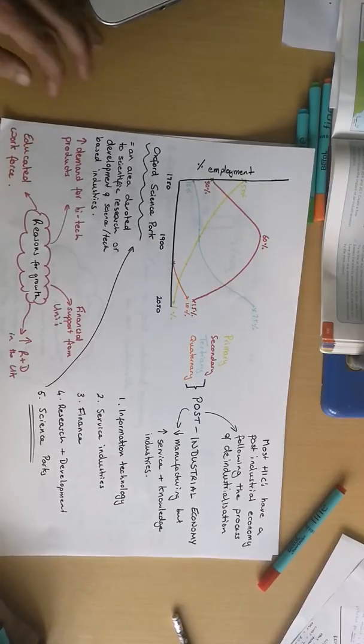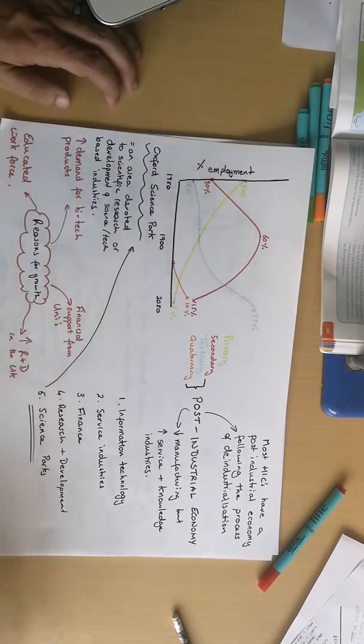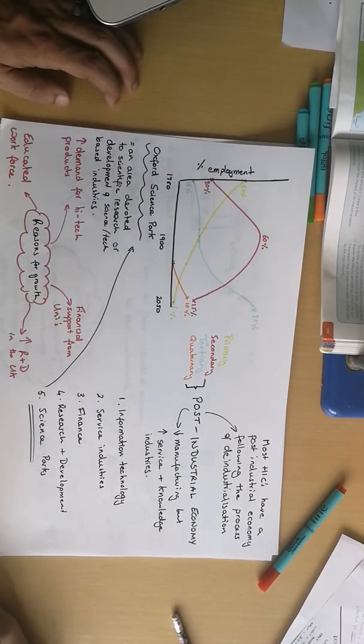However, due to globalisation and the competition from abroad that provides cheaper labour, we've seen outsourcing of the majority of the UK's manufacturing. And it's projected that by 2050, only 15% of people in the UK will be employed in secondary or manufacturing industries, due to the fact that most of that work would have moved abroad.